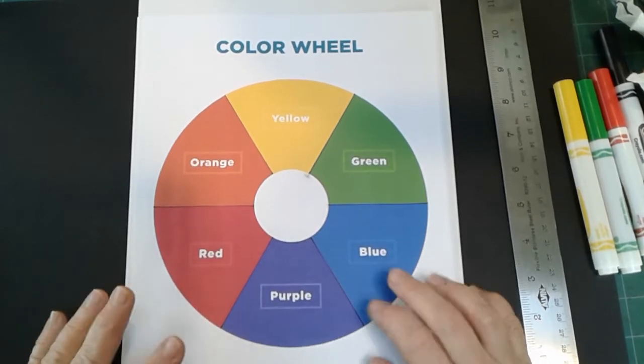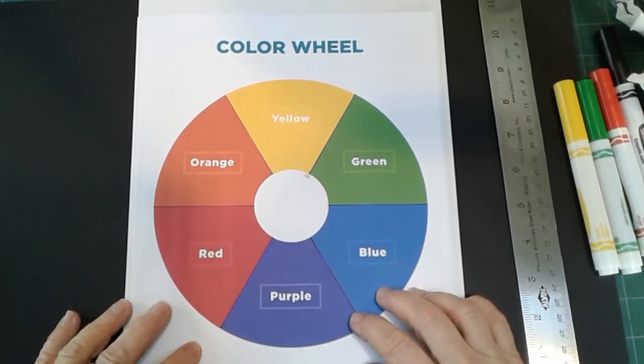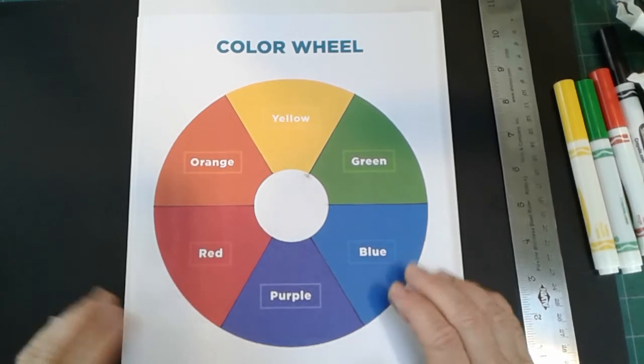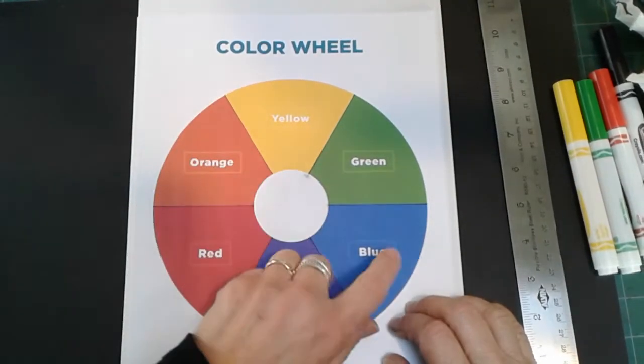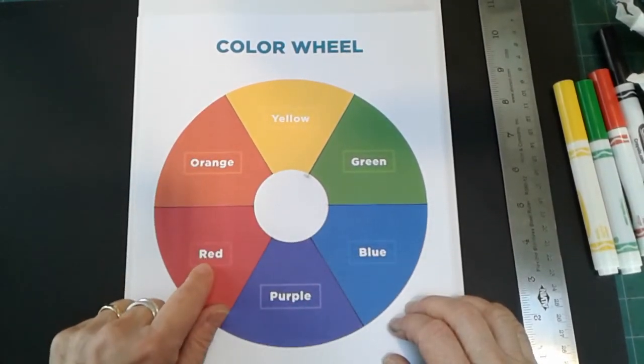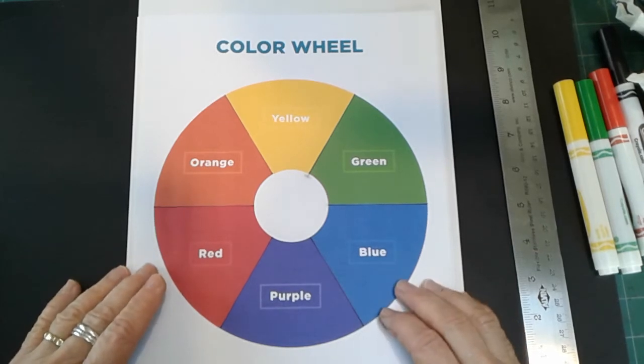This week we're going to talk about colors, and we're going to talk about three very important colors that you've already learned about. They're yellow, blue, and red, and they're called the primary colors.